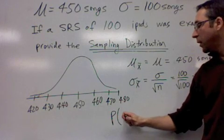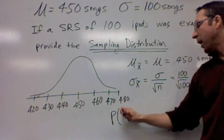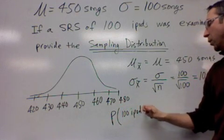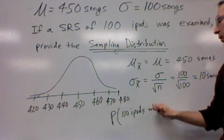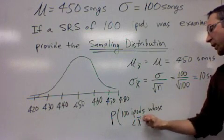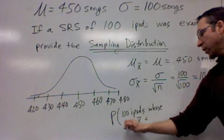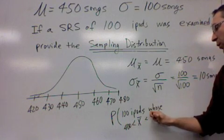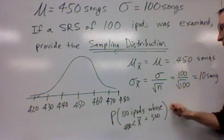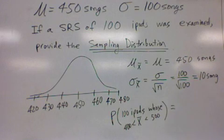What's the probability that we get 100 iPods whose average is somewhere between, let's say, 400 songs to 500 songs?